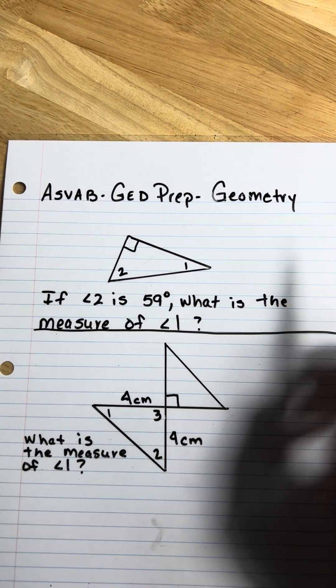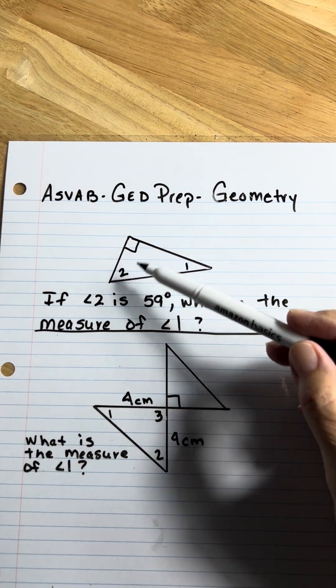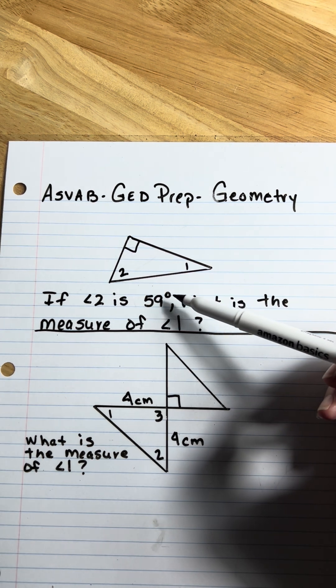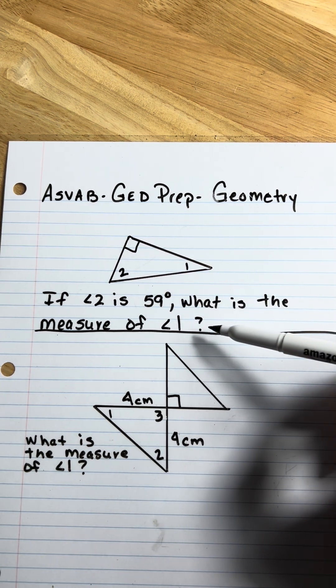Let's review a little geometry real quick. In this first problem, we have a figure here and it says if angle 2 is equal to 59 degrees, what is the measure of angle 1?